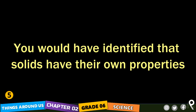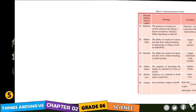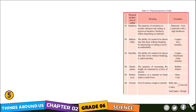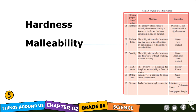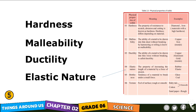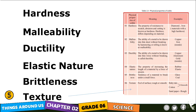You would have identified that solids have their own properties. The following table shows some physical properties of solids with examples. We are going to talk about hardness, malleability, ductility, elastic nature, brittleness, and texture. These are the things we are going to understand in this section.